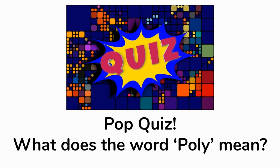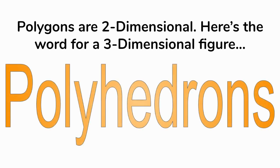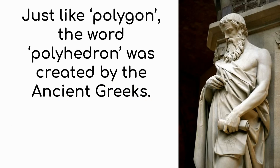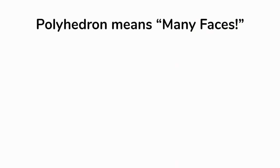Pop quiz: what does the word 'poly' mean? You remembered — poly means many. Polygons mean many sides, and polygons are two-dimensional. Can you guess what the word is for a three-dimensional figure? If a polygon is two-dimensional, the word for a three-dimensional figure is polyhedron. Just like polygon, the word polyhedron was also invented by the ancient Greeks. Poly means many, and hedron means faces — so polyhedron means many faces.